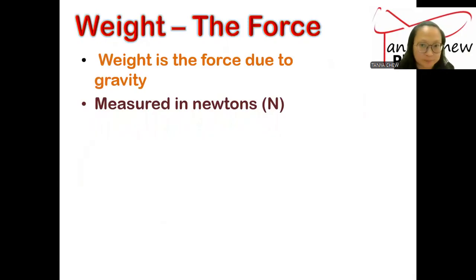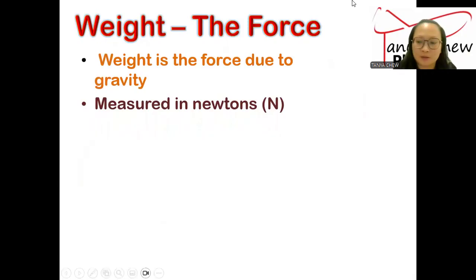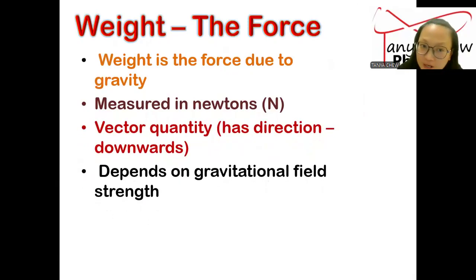So it is measured in newtons. And it is a vector quantity because it has both magnitude as well as direction. The direction of your weight is always directed towards the center of the planet: center of the Earth, center of the Moon, center of Mars. And the value, the magnitude of the weight, actually depends on the gravitational field strength.